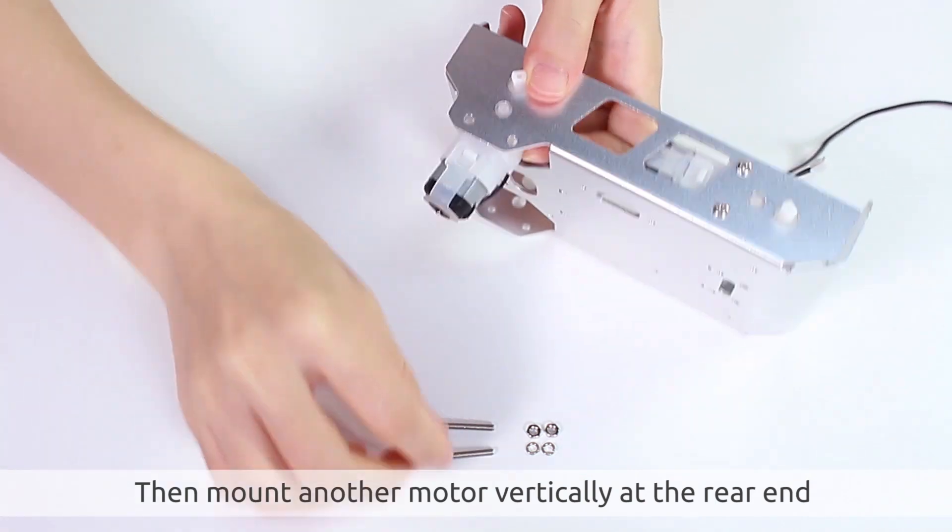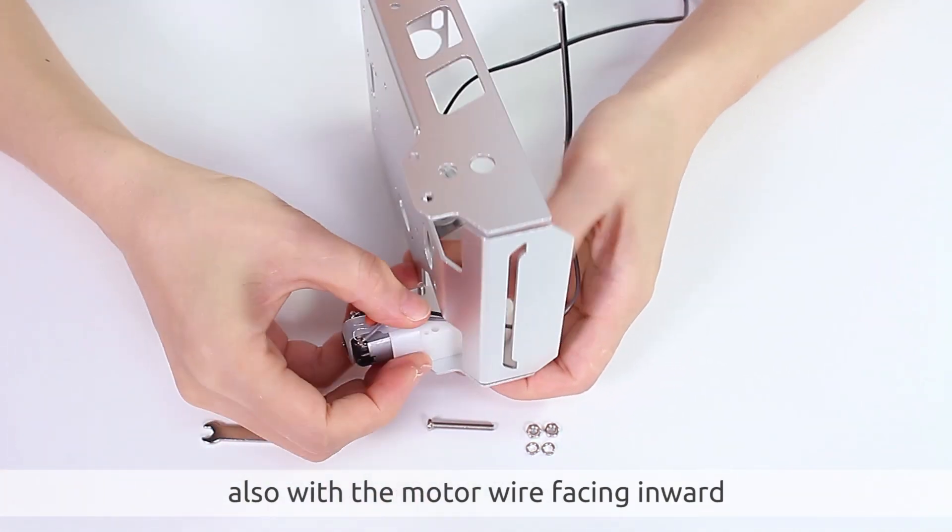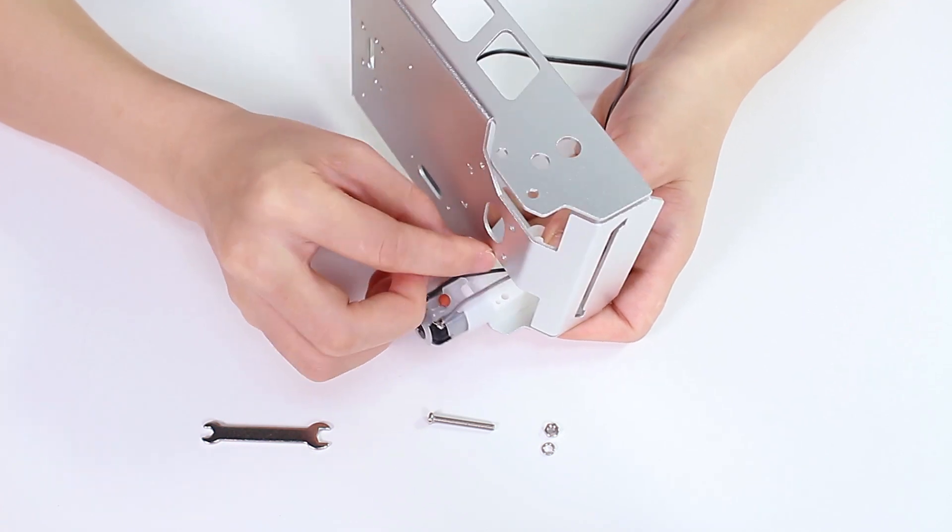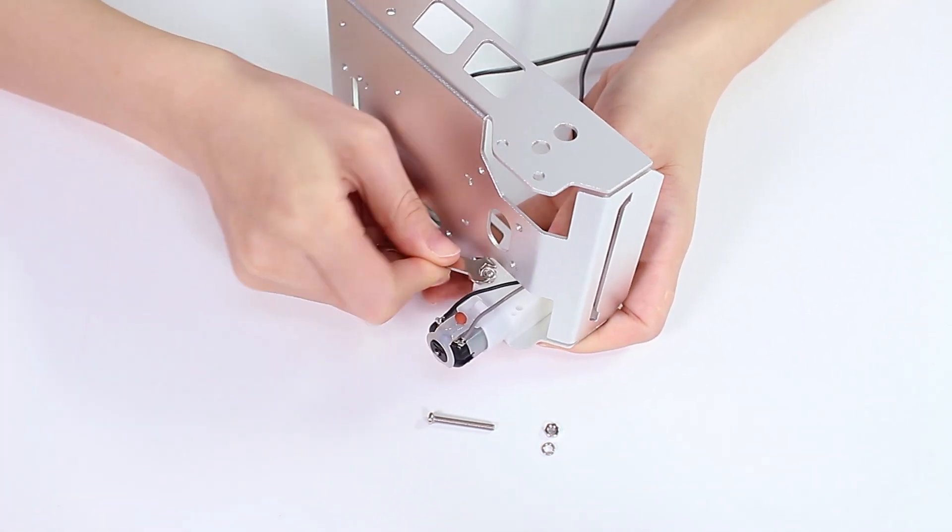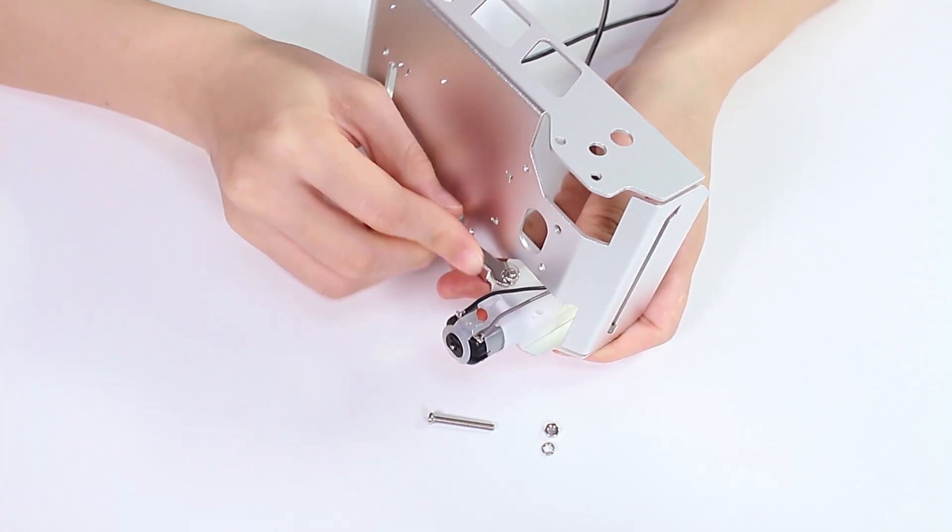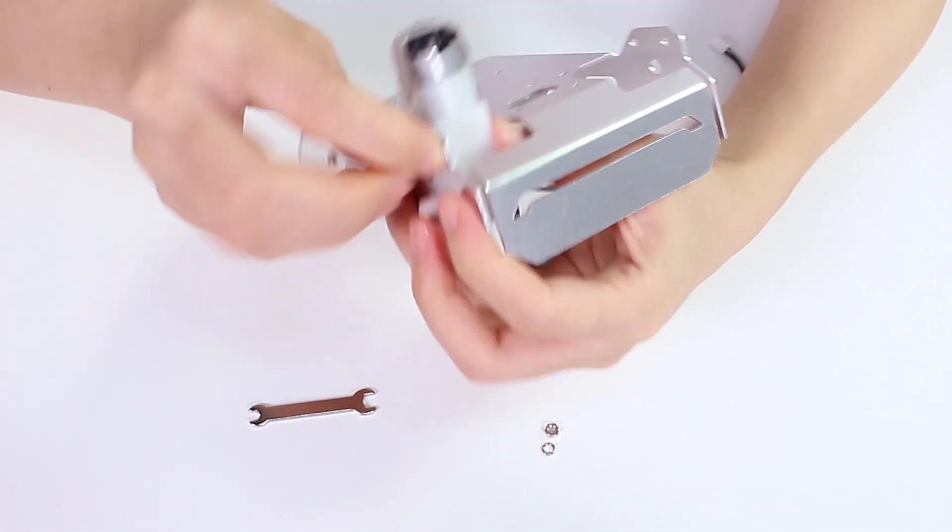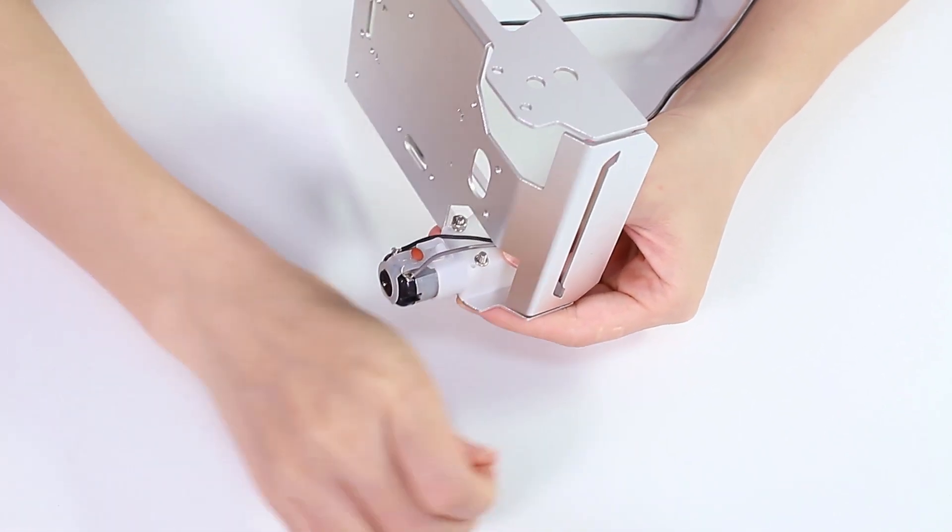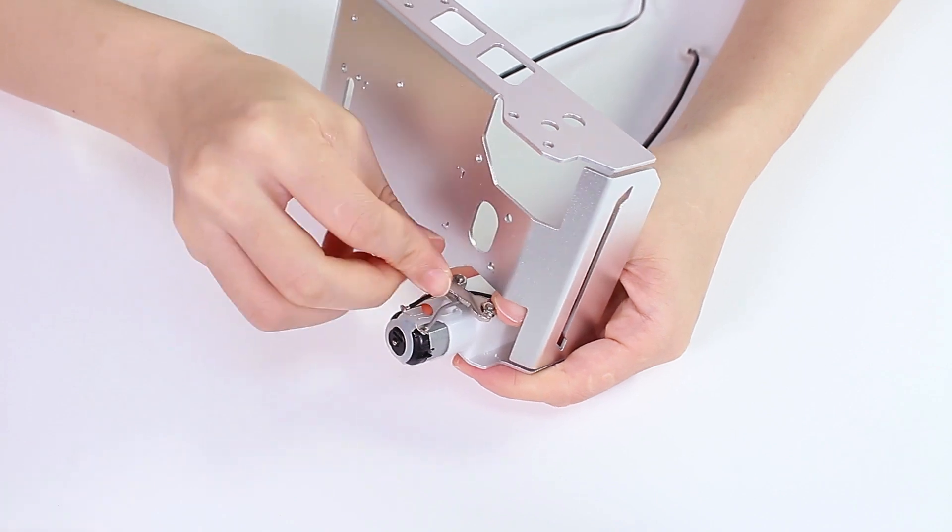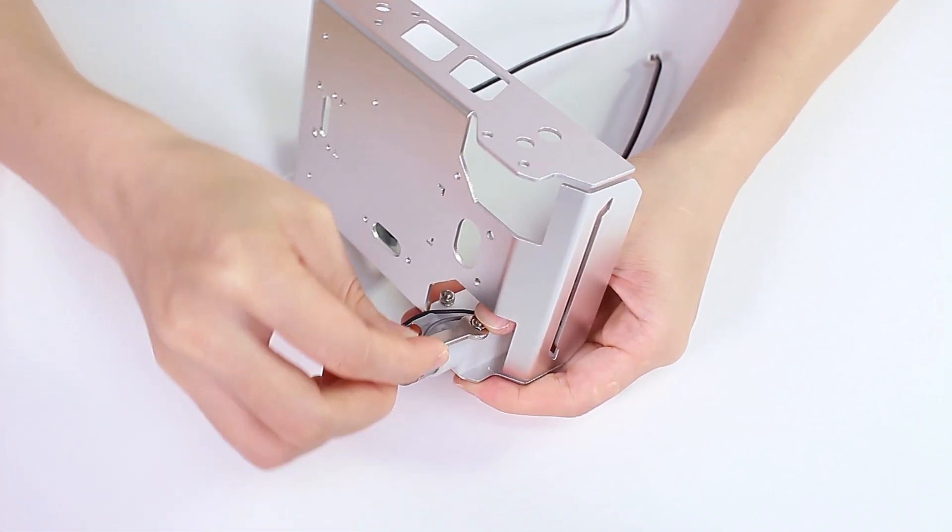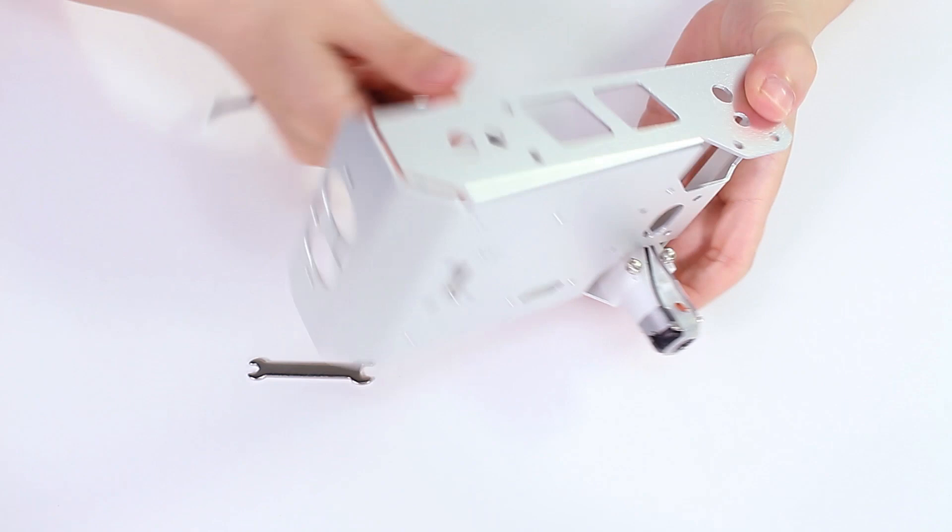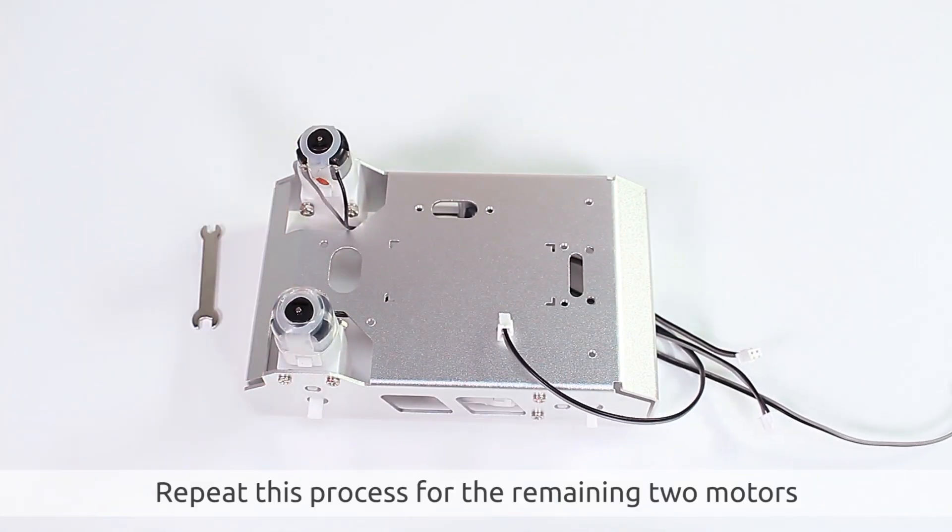Then mount another motor vertically at the rear end, also with the motor wire facing inward. Repeat this process for the remaining two motors.